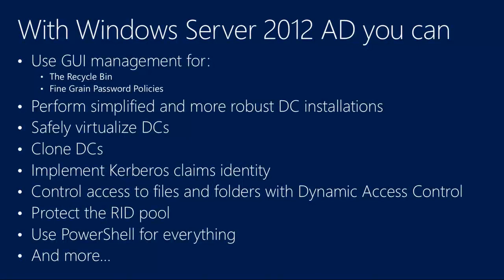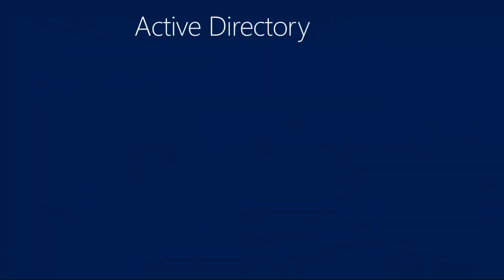I then want to go on and look at cloning DCs — how we can now take a DC and actually clone it, then very rapidly deploy our DCs throughout our enterprise. I also want to look at how Kerberos has changed, including Kerberos constrained delegation. There are some really nice enhancements there. I also want to look at what actually goes inside the Kerberos token and how we can use that additional information to enhance how we control access. Then I'll cover changes to the RID pool and PowerShell, which is used absolutely everywhere.